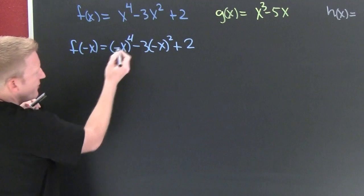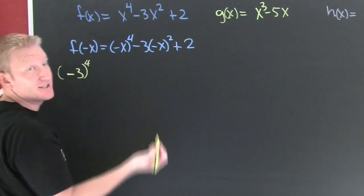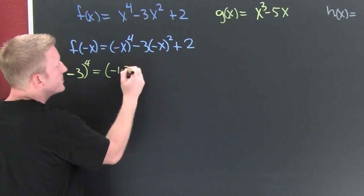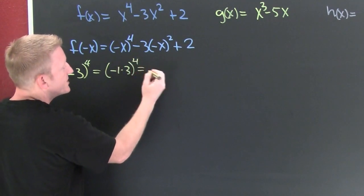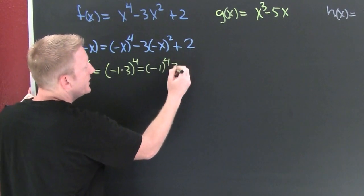Take a look at this. If I had had something like that, if I had had minus three to the fourth, just saying, right? You could see this as minus one times three to the fourth, which is the same as minus one to the fourth, three to the fourth.